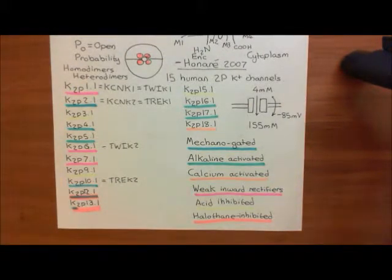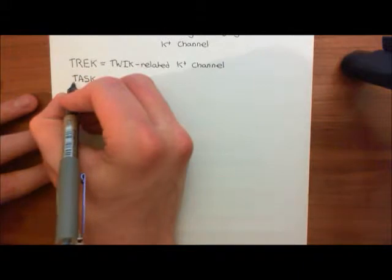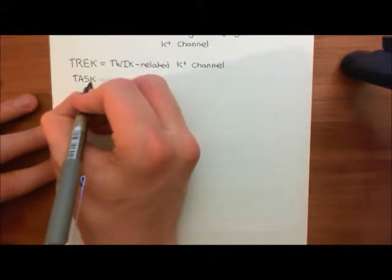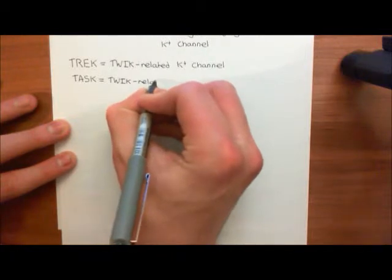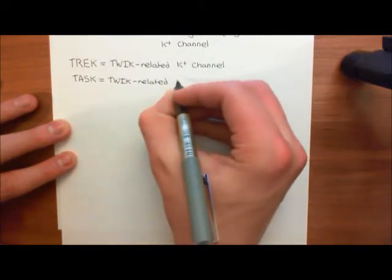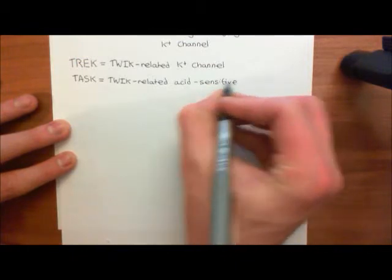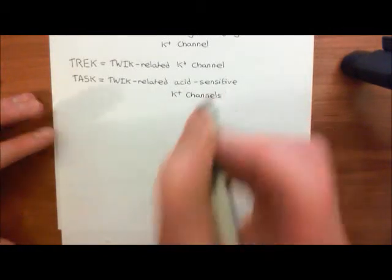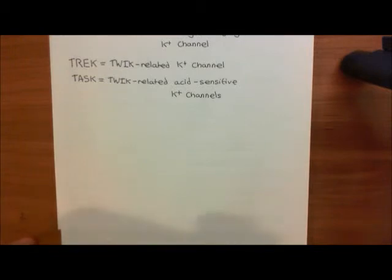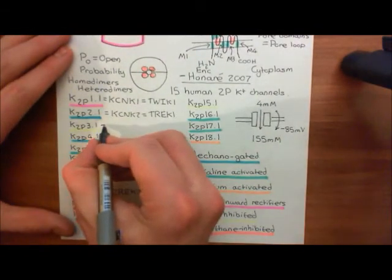The next name is TASK. Some of these two pore-domain potassium channels are called TASKs. TASK stands for TWIK-related Acid-Sensitive potassium channel - the T is for TWIK-related, the A is for acid, the S is for sensitive, and the K is for potassium channel. These are the TWIK-related acid-sensitive potassium channels. The first of these is K2P3.1.